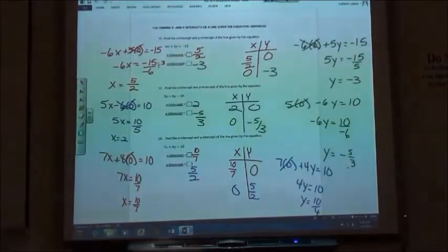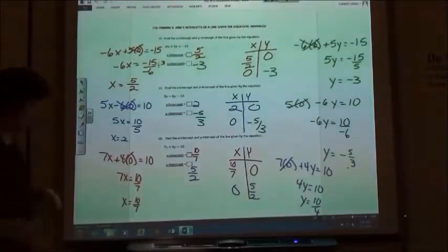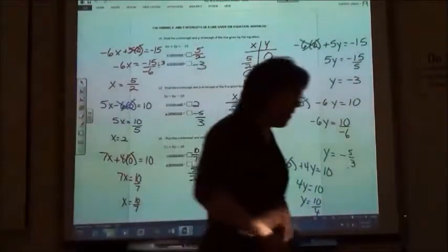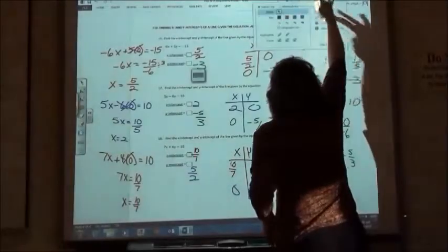All right. So x-intercept, the zero goes in for the y. Y-intercept, the zero goes in for the x, for the opposite one. So you're getting rid of that other letter you don't want in there. All righty.